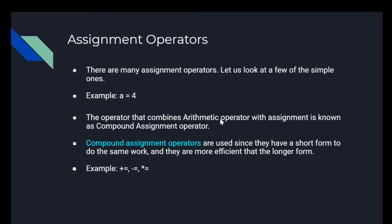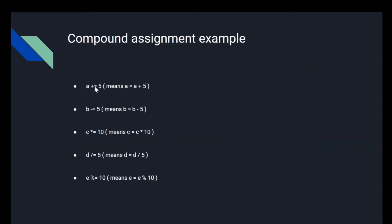Now we have our assignment operator. There are many different types of assignment operators, so we'll look at the simpler ones. An example is a equals 4. The operator that combines arithmetic operators with assignment operators is known as the compound assignment operator. What this does is provide a short form to do the same work — they are more efficient than the longer form. Examples are plus equals, minus equals, and multiplication equals. For instance: a plus equals 5 is the same as a equals a plus 5; b minus equals 5 means b equals b minus 5; c multiplied equals 10 means c equals c times 10; d divided by equals 5 means d equals d divided by 5; and e percent sign equals 10 means e equals the remainder of e divided by 10.